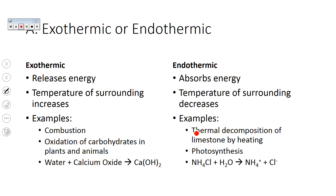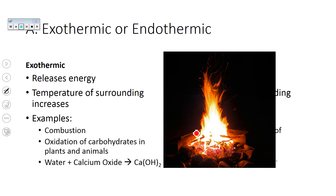Exothermic reactions release energy to the surroundings, so the temperature of the surroundings is going to get hotter — the surroundings will see an increase in temperature. Examples are combustion, which is any time something heats up and reacts with oxygen in an explosion; the oxidation of carbohydrates in plants and animals; and when you mix water and calcium hydroxide, the reaction gets warm.